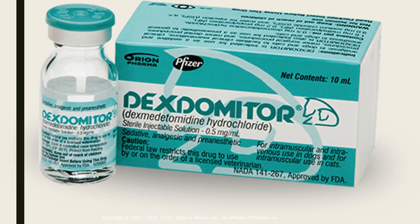Dexmedetomidine, brand name Dexdomitor from Pfizer — on its label insert it states it is an alpha-2 adrenergic agonist similar to medetomidine, used as a pre-anesthetic and for sedation and analgesia in dogs and cats. Contraindications include patients with cardiac disease, liver disease, and kidney disease. Its adverse effects include bradycardia, decreased respiration, hypothermia, urination, and vomiting. It can be reversed by atipamisol.